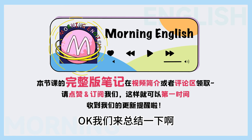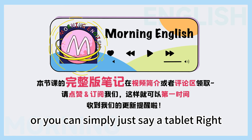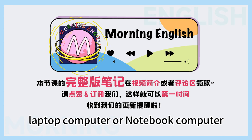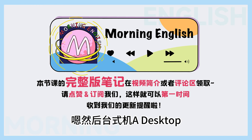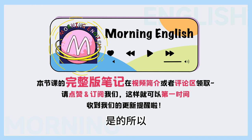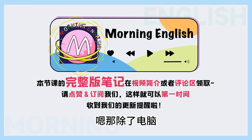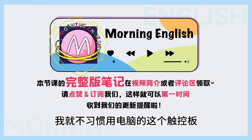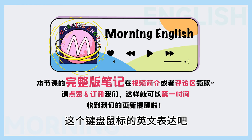我们来总结一下啊，首先我们常用的平板电脑，英文是tablet computer，or you can simply just say a tablet. 笔记本电脑呢，laptop computer or notebook computer，或者直接叫做a laptop or notebook都可以。然后台式机，a desktop；一体机，all-in-one computer. 所以下次再提到不同类型的电脑的时候啊，大家呢就要注意区分。那除了电脑，我们还有很多的配件嘛，比如说我就不习惯用电脑的触控板，我更喜欢用键盘和鼠标，那我们就来说说这个键盘鼠标的英文表达吧。